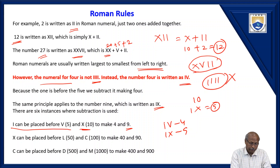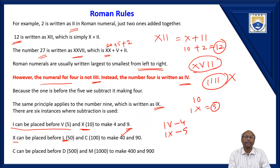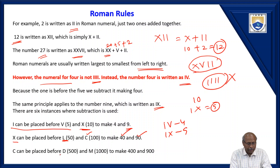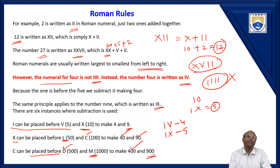Similarly, X can be used before L. L means 50, so if you write X before L, the value becomes 40. Similarly, X can also be written before C. C is 100, X is 10, so X before C becomes 90. C can be placed before D — C is 100, and before D it becomes 400. And C before M becomes 900.